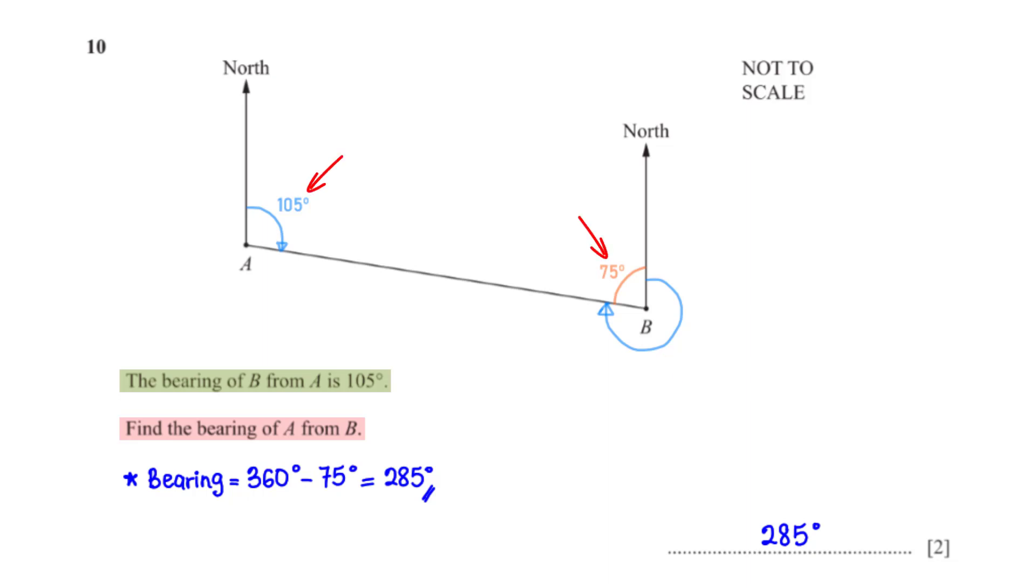These two are interior angles, which means they add up to 180 degrees. So, to get this angle, we subtract 105 degrees from 180 degrees, which gives us 75 degrees. Angles at a point add up to 360 degrees. So, to get the bearing of A from B, we subtract 75 degrees from 360 degrees, which gives us 285 degrees.